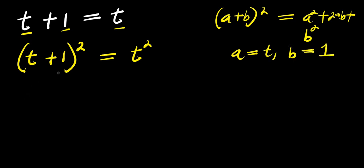So let's make use of that, let's make use of this identity right here. So we are simply going to have t squared plus 2 times t times 1 plus 1 to the power of 2 equals t power 2.